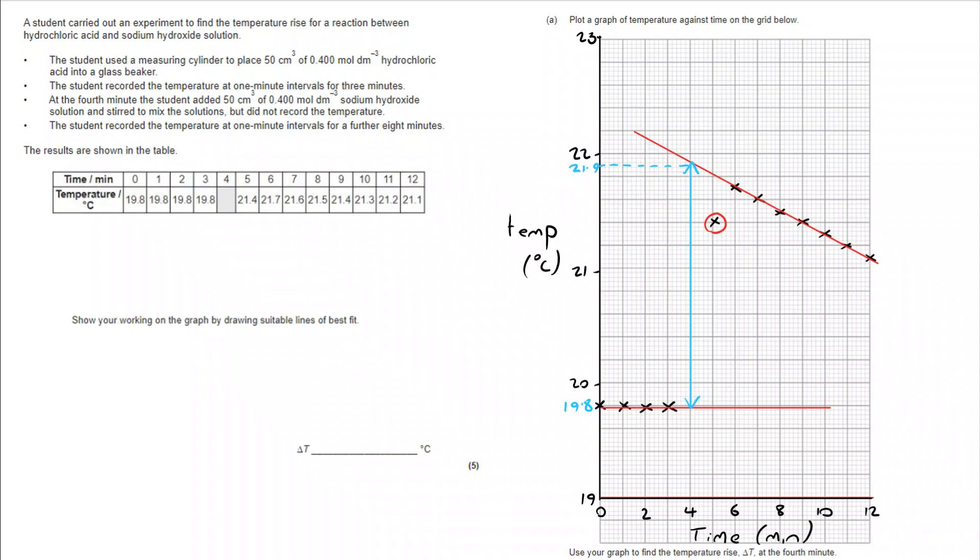So I can now work out delta T, my change in temperature, by measuring the difference. 21.9 take away 19.8 takes me to a value of 2.1 degrees Celsius.